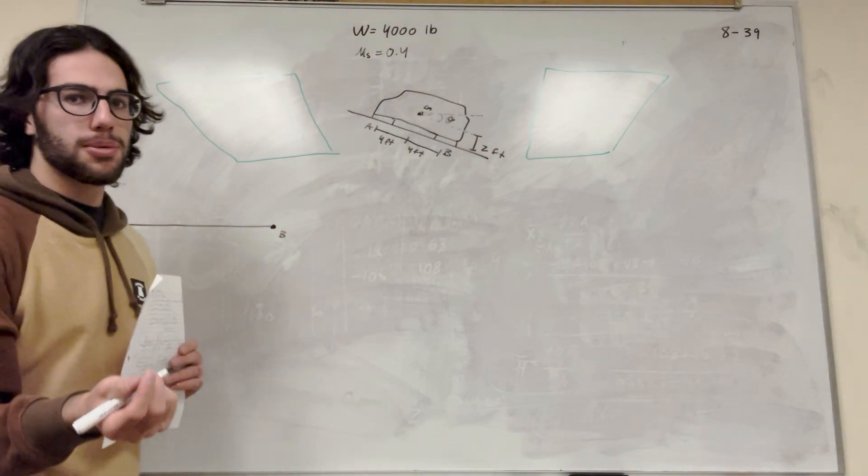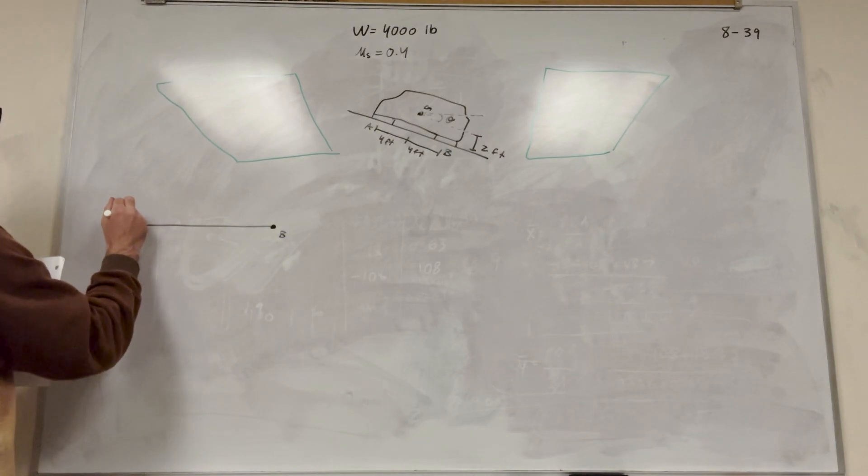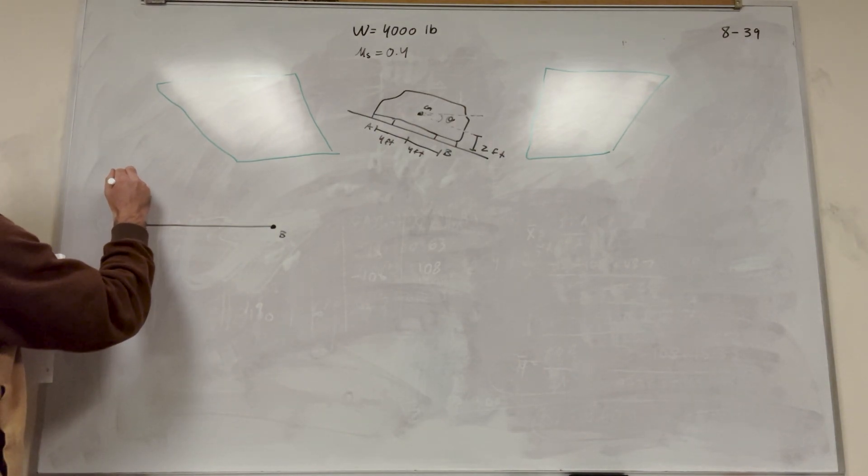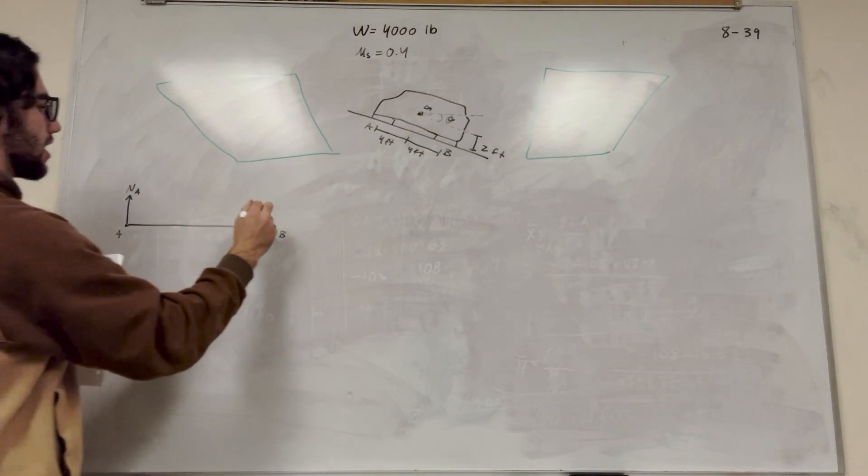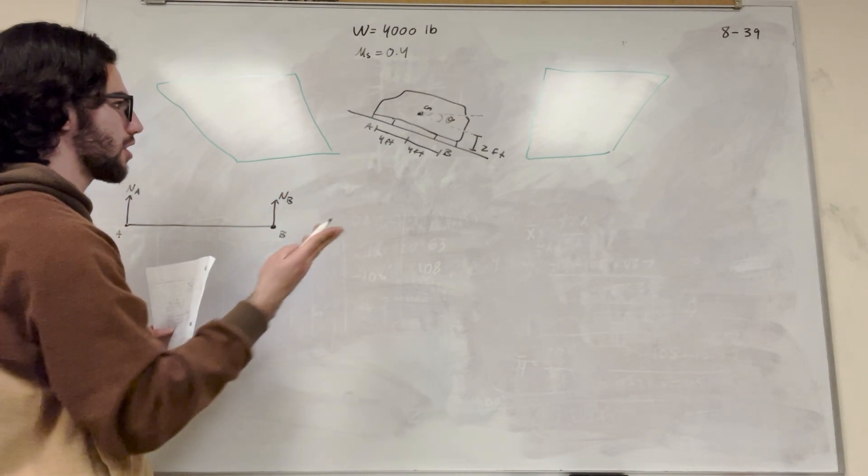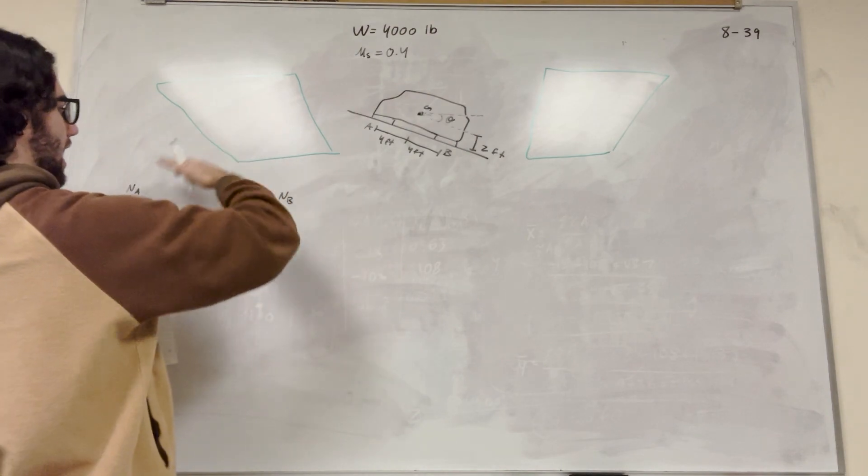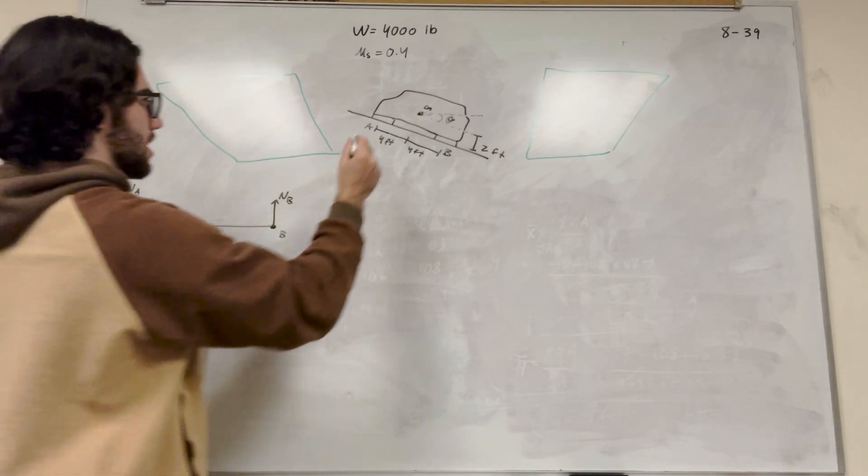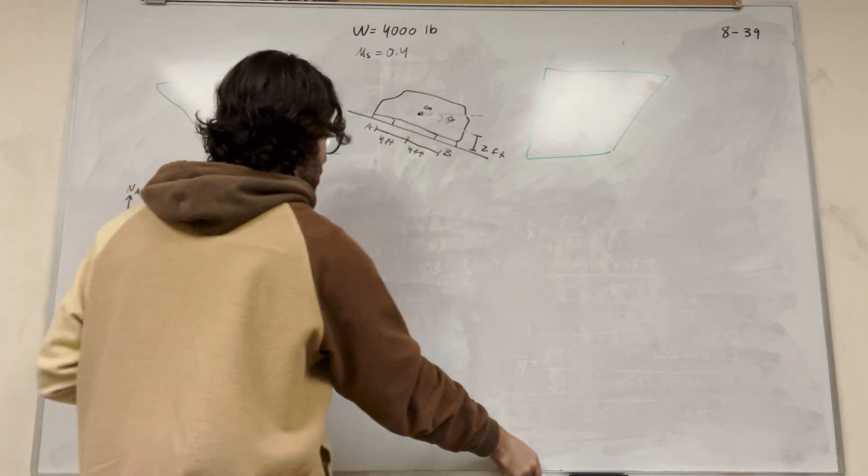So for a free body, normal is going to act perpendicular to the surface. So at A, we're going to have it going straight up. So this is normal at A and this is normal at B. And we tilted our graph, right? We have it here and we tilted it down onto here.